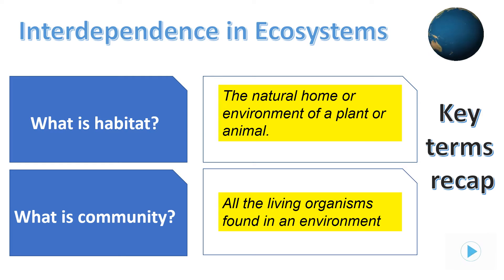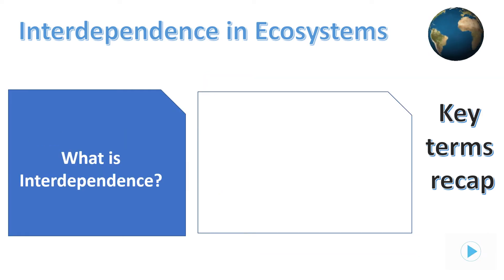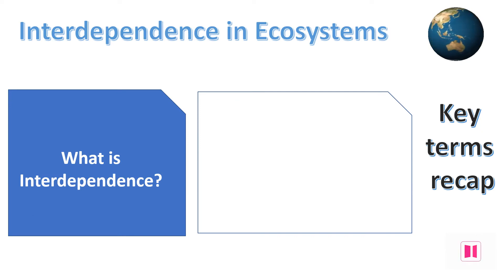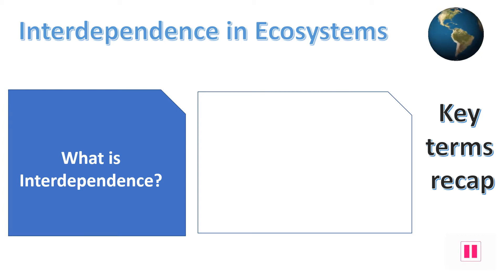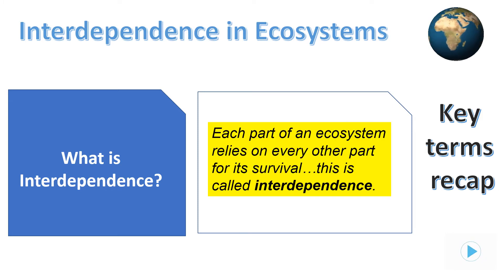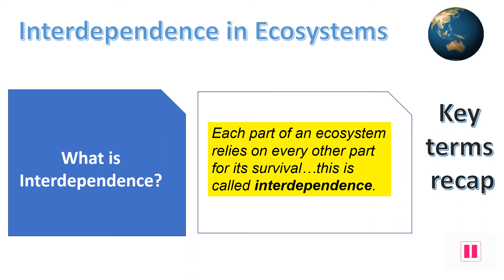These are key terms that often come up in science as well as geography. This presentation is going to look specifically at the term interdependence within an ecosystem, so it's well worth writing down what this word means. Interdependence is when each part of an ecosystem relies on every other part for its survival.